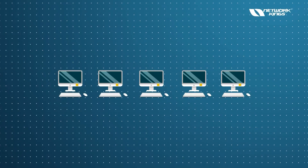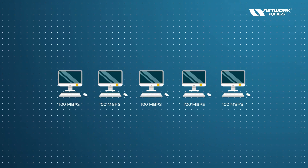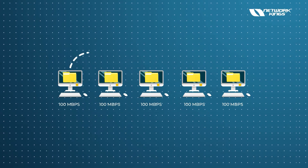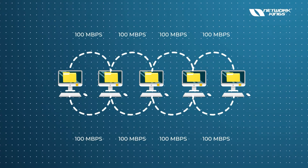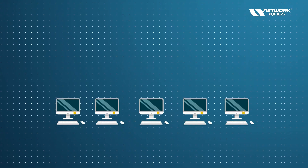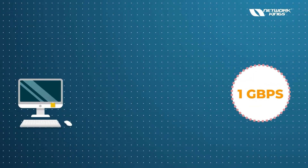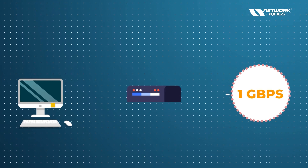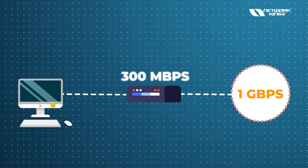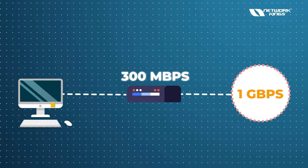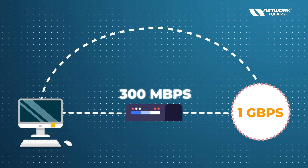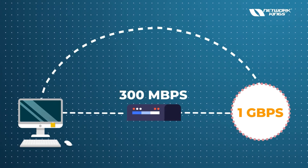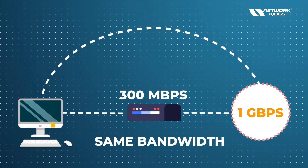If all your devices are 100 Mbps, the maximum throughput they can send or receive is 100 Mbps. For example, if you have 1 Gbps and your computer has 1 Gbps, but one device in the chain only supports 300 Mbps, you will get 300 Mbps. If any device has low bandwidth, that becomes the bottleneck and limits your overall speed.